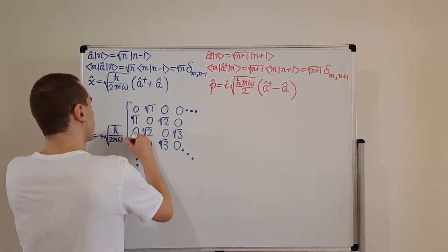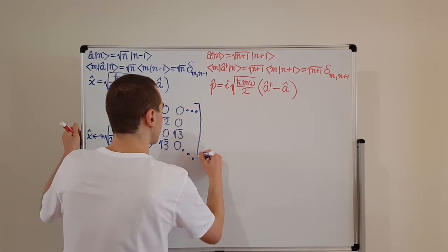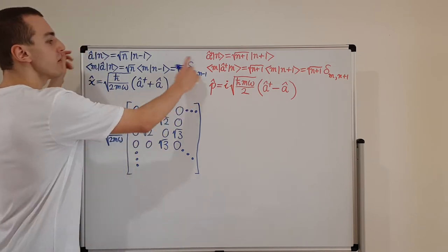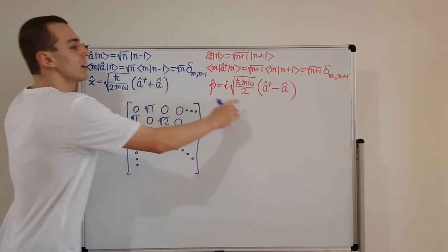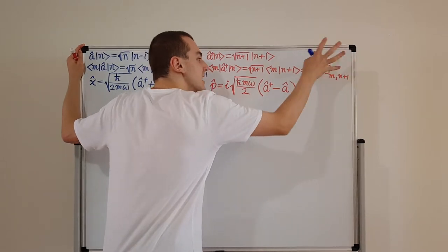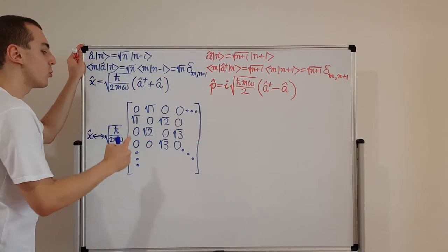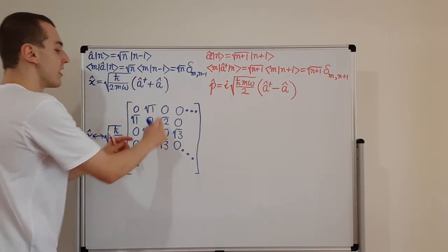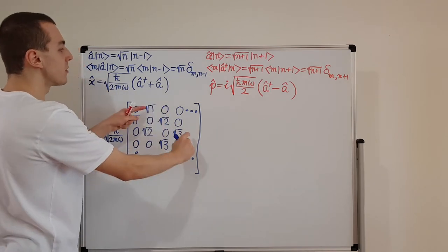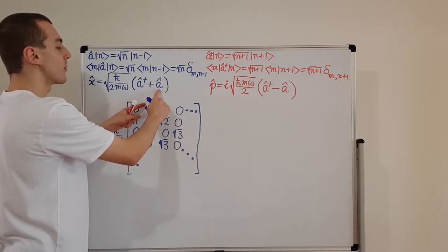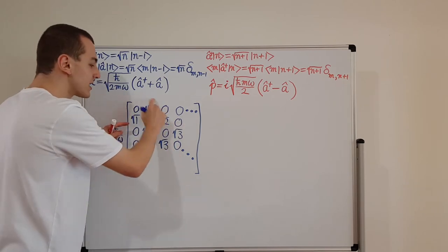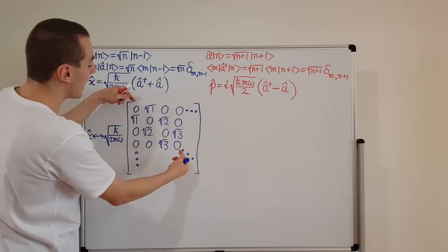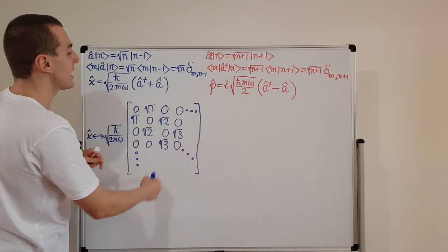So examining what we've drawn: the diagonal is zeros because neither A nor A-dagger contributes to the diagonal — we're just taking the sum of two off-diagonal matrices. In the previous video, we saw that each of these individual matrices corresponds to an off-diagonal: the upper off-diagonal comes from A, and the lower off-diagonal comes from A-dagger. So we have A plus its transpose — that is what taking the sum produces.